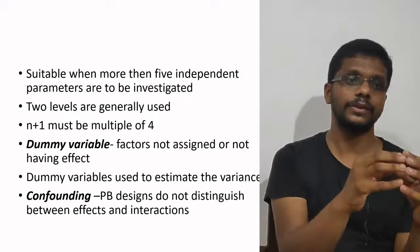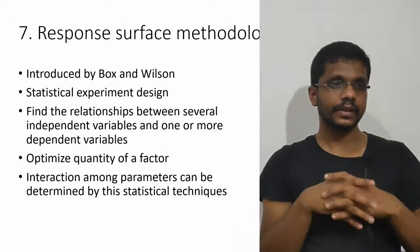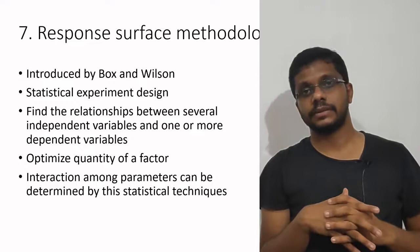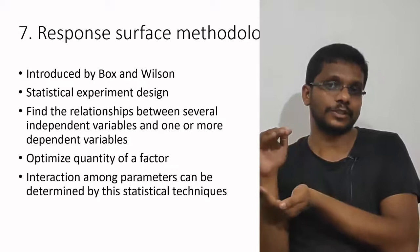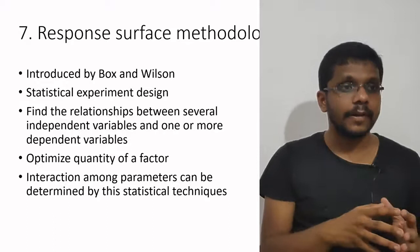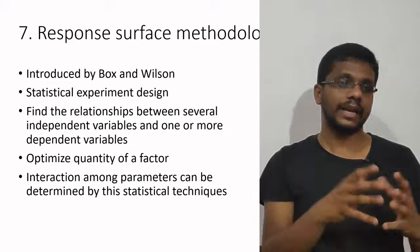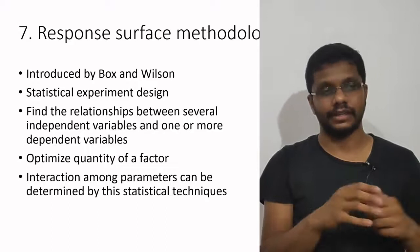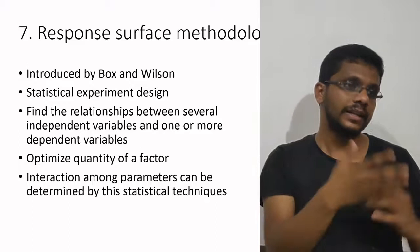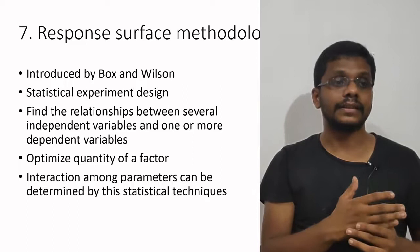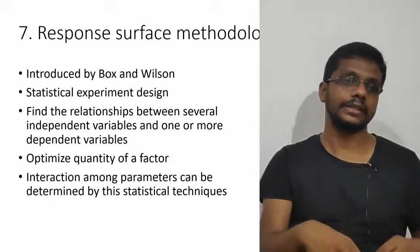Next is Response Surface Methodology (RSM). We generally do RSM after the Plackett-Burman design, which identifies the most important variables. RSM then determines in what quantities those variables should be used. It was introduced by Box and Wilson. It is a statistical experimental design that defines the relationship between several independent variables and one or more dependent variables, optimizing the exact quantity — what is the exact pH, how much carbon source, how much nitrogen source to add. It also determines the interactions among different compounds using statistical techniques.